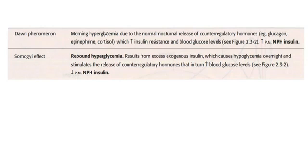Dawn phenomenon is the morning hyperglycemia due to normal nocturnal release of counter-regulatory hormones — glucagon, epinephrine, cortisol — which increase insulin resistance and blood glucose levels. In dawn phenomenon, there is morning hyperglycemia due to normal nocturnal release of counter-regulatory hormones.